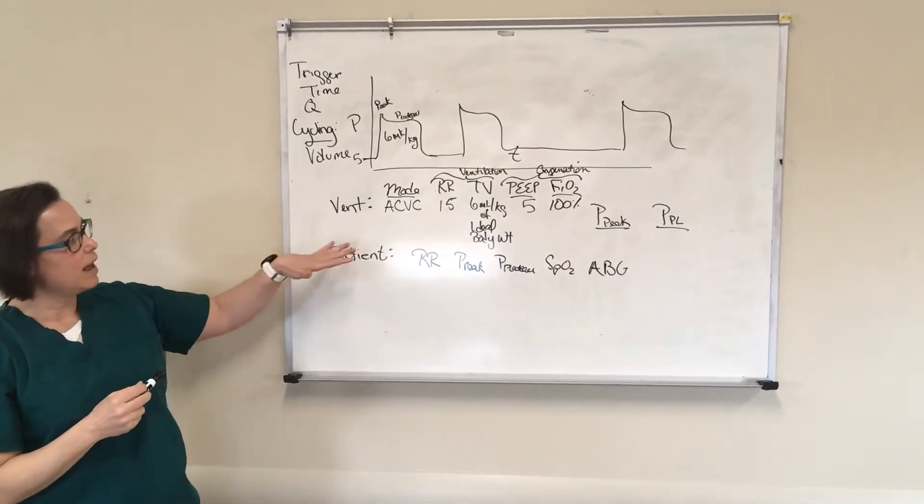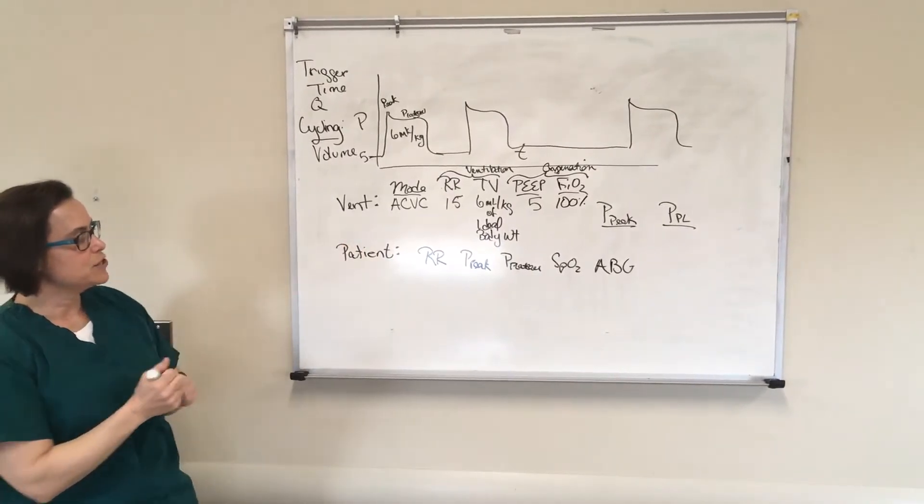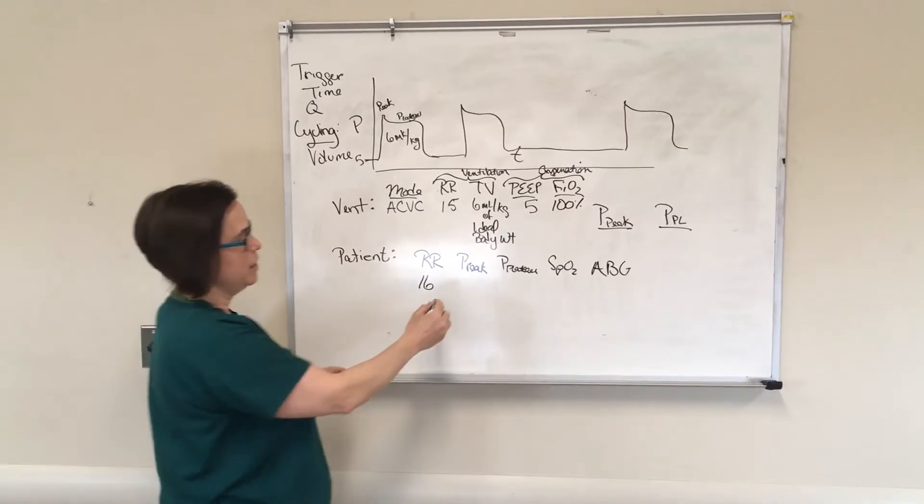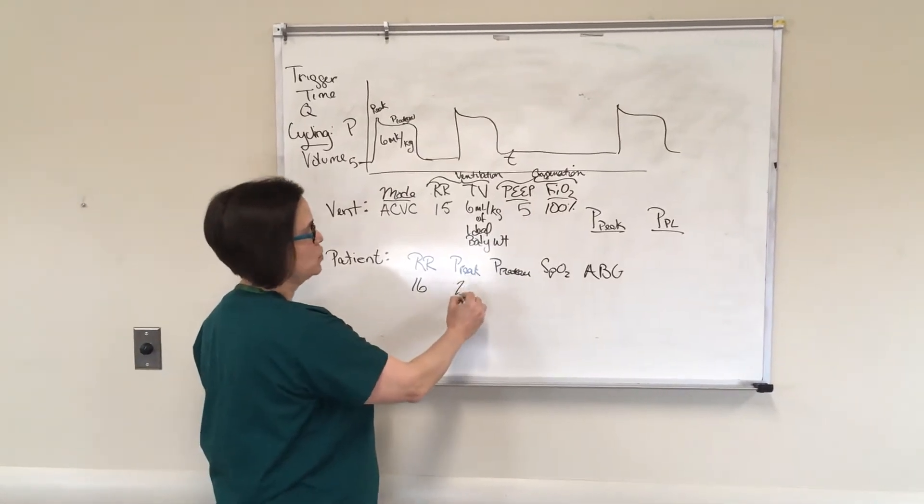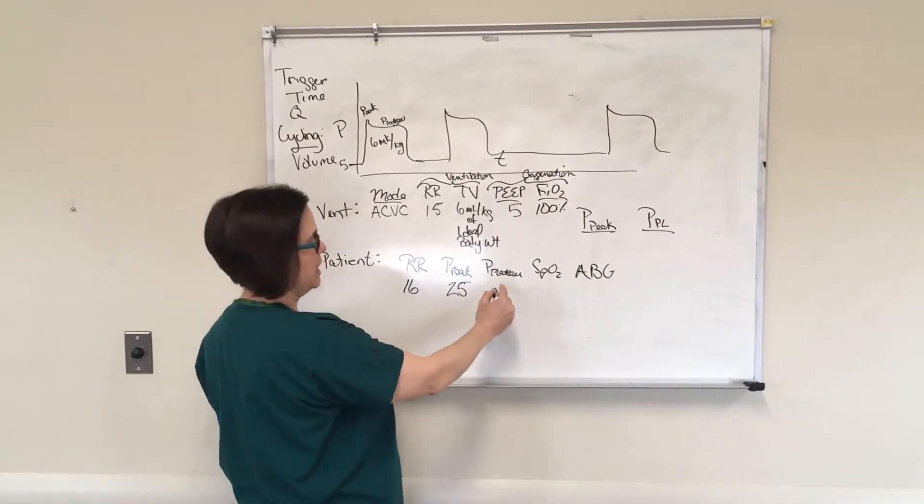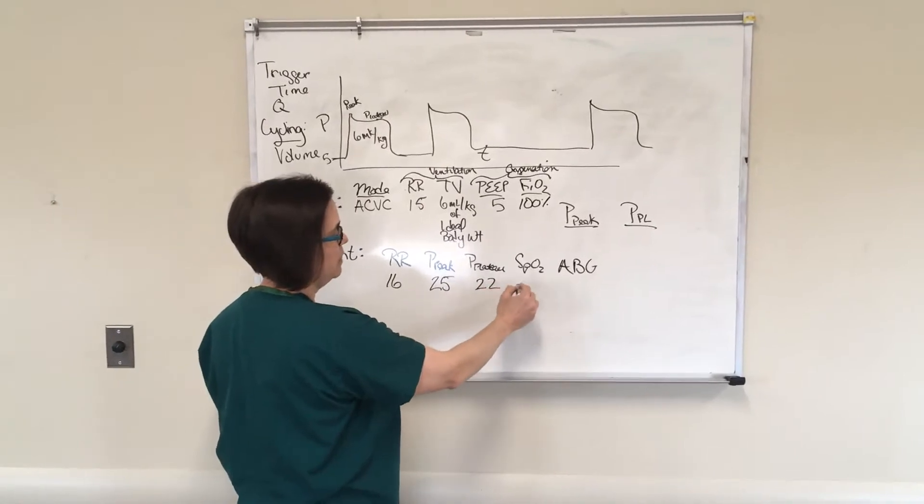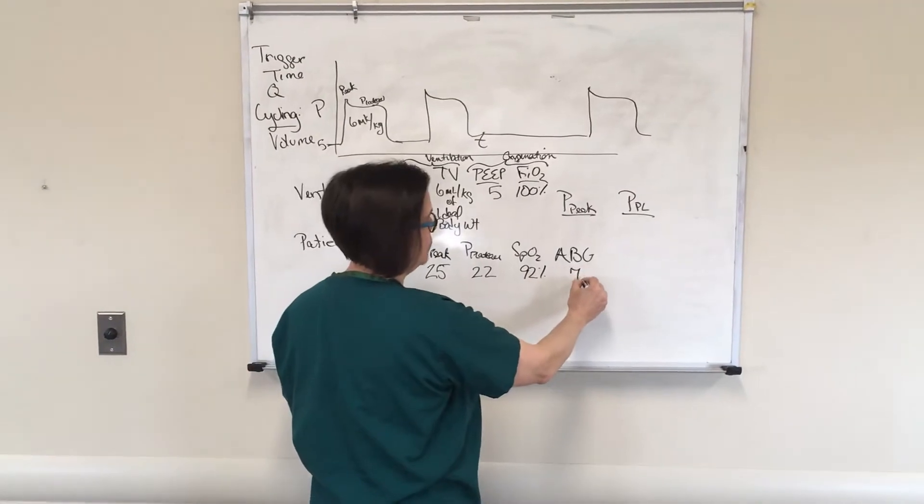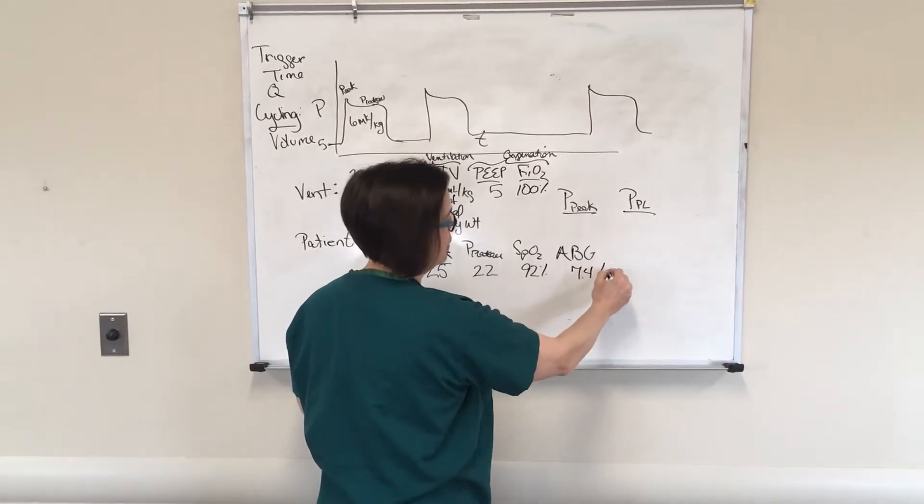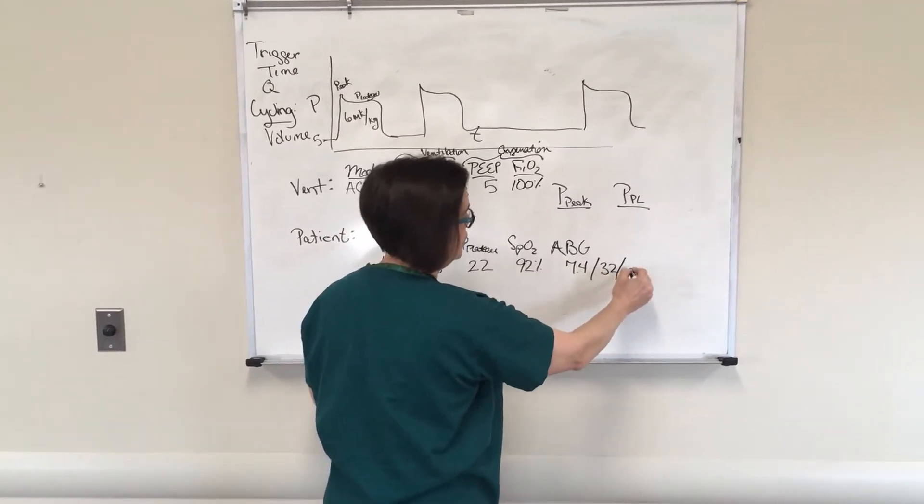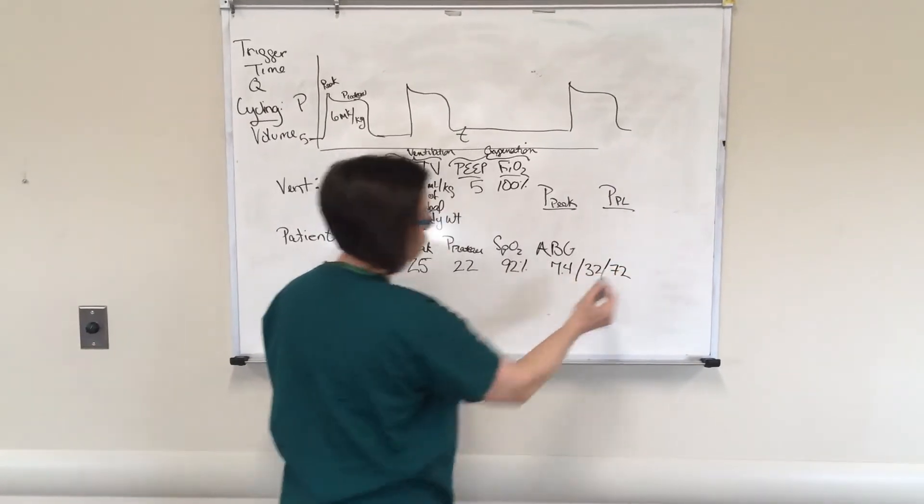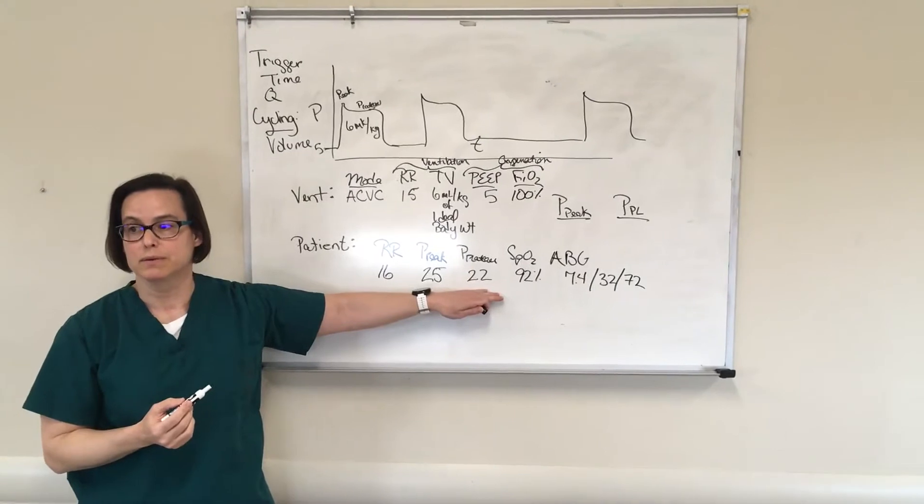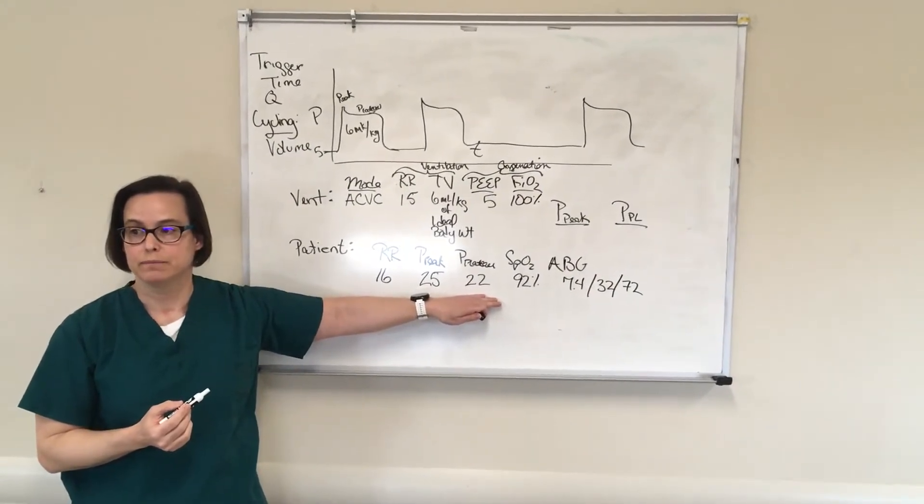So let's say on this that the patient has a respiratory rate of 16 and a peak pressure of 25 and a plateau pressure of 22 and a sat of 92 percent and an ABG of 7.43, 32, right? These are the numbers that are going to help us. And we'll talk about what those mean in just a second.